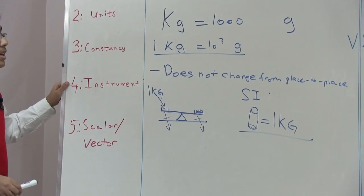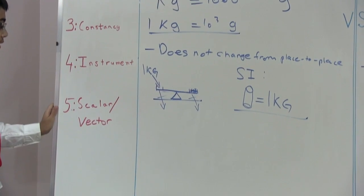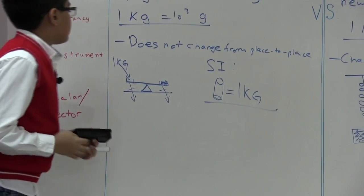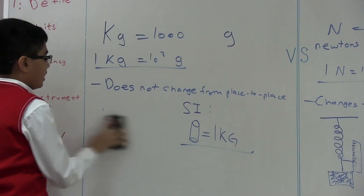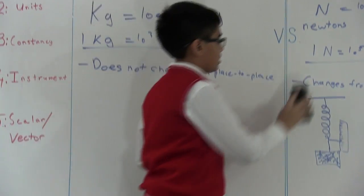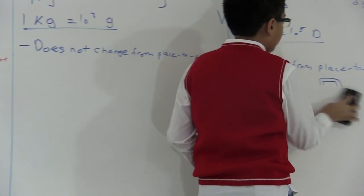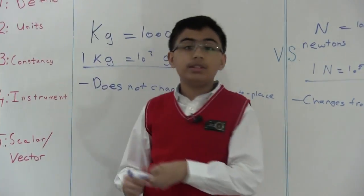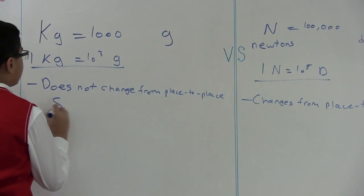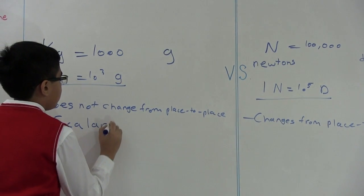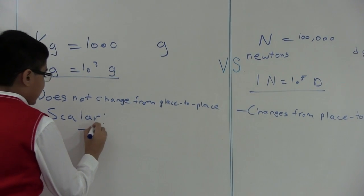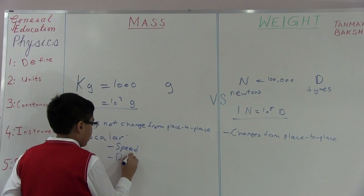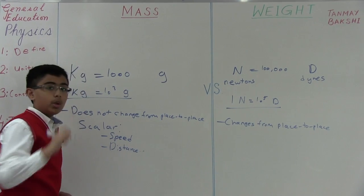So that was the instrument that you use to measure it. Now, scalars and vectors. Let's get started. So first of all, I'm going to erase these instruments because I'm almost 100% sure that you've learned them by now and we also need the space for scalars and vectors. Now if you don't even know what a scalar vector is, I'm going to be explaining that to you right now with some examples. So an example of a scalar could be speed, distance, and there's a few more which I'll talk about later.